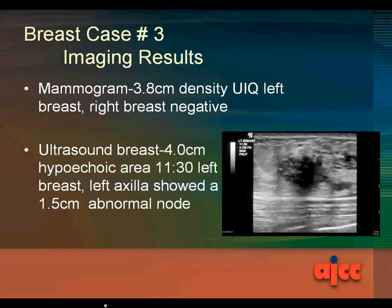The imaging results. The mammogram showed a 3.8-centimeter density in the upper inner quadrant of the left breast; the right breast was negative. The ultrasound showed a 4-centimeter hypoechoic area at 11:30 in the left breast. The left axilla showed a 1.5-centimeter abnormal lymph node.